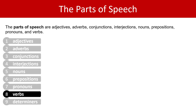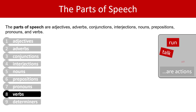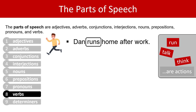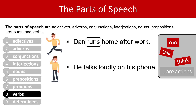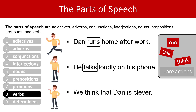Next, verbs. Verbs are actions: run, talk, think. You can see these are all actions, even if they are mental actions. 'Dan runs home after work' — the verb is 'runs', it's an action. 'He talks loudly on his phone' — 'talks' is an action, it's a verb. 'We think that Dan is clever' — 'think' is an action but it's a mental action. Verbs are not always about running and jumping; sometimes they are about thinking, considering, or guessing — actions that happen inside the head.